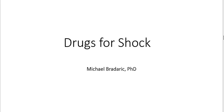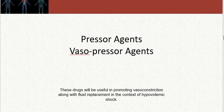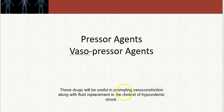So that was the first group of drugs. The next group of drugs are drugs that conceptually you are familiar with, but we haven't really talked about them in this context of being treatments. We're going to look at pressor agents or vasopressor agents. These drugs are really useful in promoting the vasoconstriction that has to go along with other routes of treatment, in this case fluid replacement in the context of hypovolemic shock.